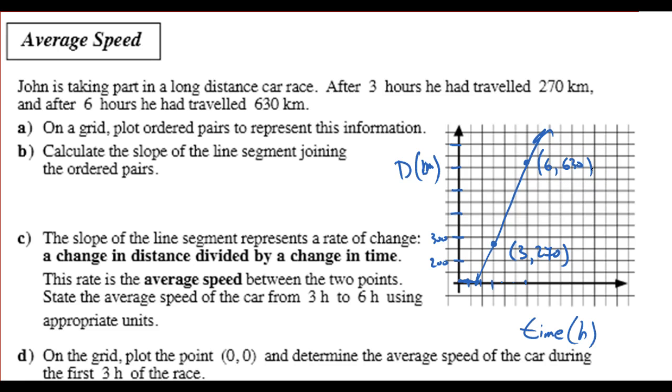Calculate the slope. 630 minus 270 over 6 minus 3. I'm going to get 360. Divide that by 3 and that's going to give me 120. And, again, always if you can interpret this distance here. That's 120 kilometers per hour. Because the hour is on the bottom and the kilometers up on the top.